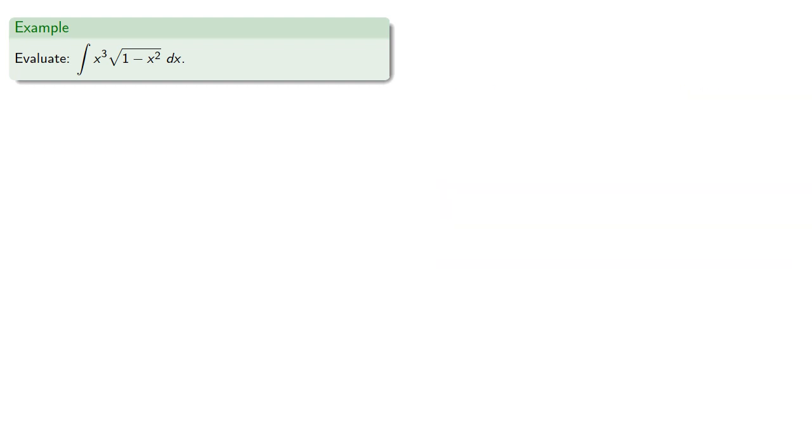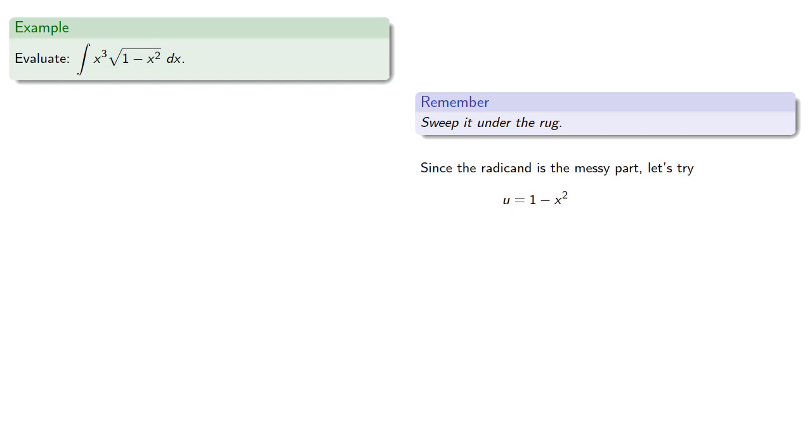So the key idea behind u-substitutions is to sweep it under the rug. And in this case, since the radicand is the messy part, let's try u equal the radicand. And so du will be...